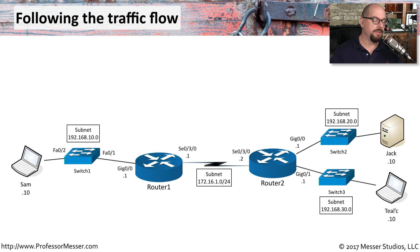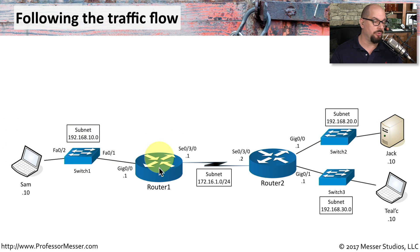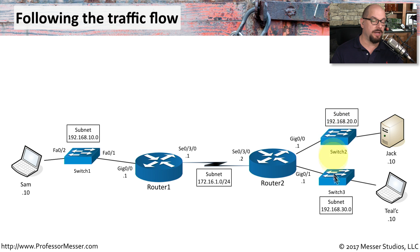Here's a typical network. We have a user on one side connected to a switch, which is connected to a router that routes across a wide area network. On the other side of that WAN, the router splits off into two different IP subnets with two switches, and there are two users at that location connected to the network.